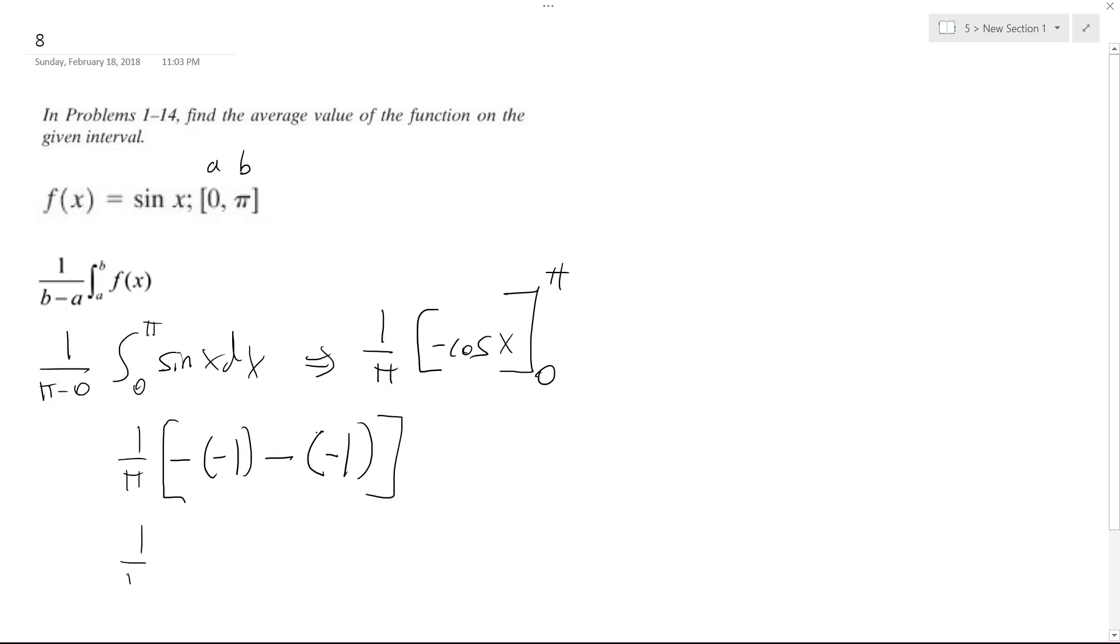So inside we get one over pi times one, and this becomes plus one, and two times one over pi is equal to two over pi. And that's it, I hope this helped you out. Thanks for watching, have a great day.